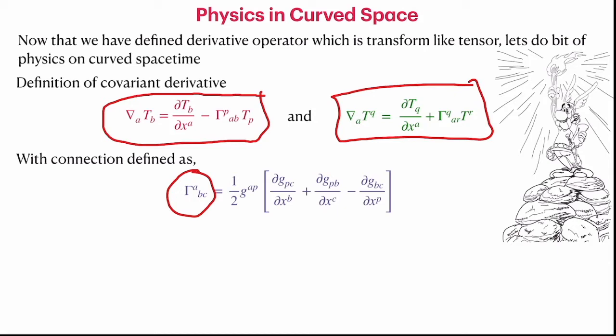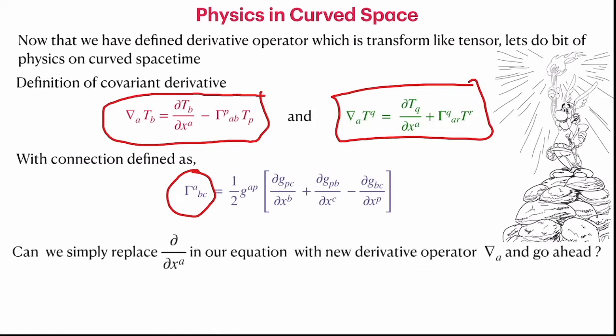Some of you had confusion about the symmetry of the metric tensor. The metric tensor, both upper and lower indices, must be symmetric because it represents the distance between two points, which doesn't change if you go from A to B or B to A. Therefore, the Christoffel symbol gamma ABC is symmetric under the lower two indices, meaning gamma ABC equals gamma ACB.